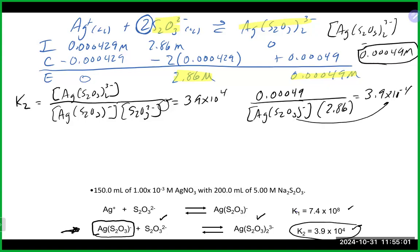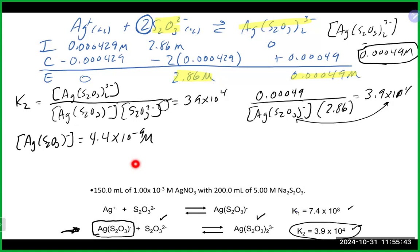We plug in our values: 0.000429 divided by [AgS₂O₃⁻] times 2.86 equals 3.9×10⁴. Rearranging, [AgS₂O₃⁻] = 0.000429 divided by (3.9×10⁴ times 2.86), which gives us approximately 3.8×10⁻⁹ M. If you don't have scientific notation on your calculator, you'll see about eight zeros followed by a four.